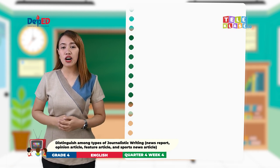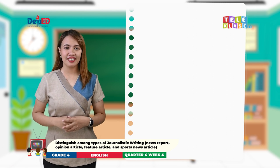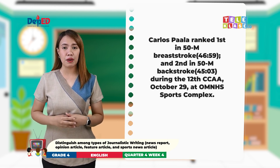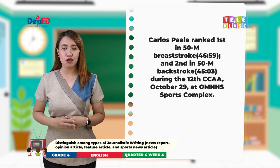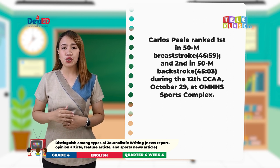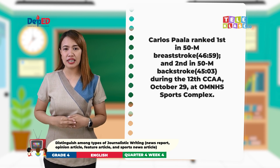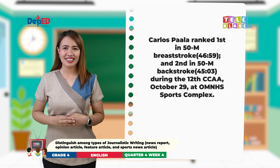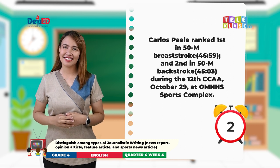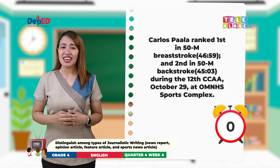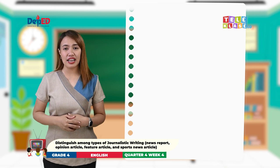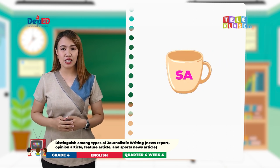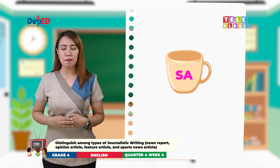Third sample: Carlos Paala ranked first in 50-meter breaststroke and second in 50-meter backstroke during the 12th CCAA, October 29, at OMNHS Sports Complex. The right answer is S.A. cup. The sample states details or results in a swimming competition.